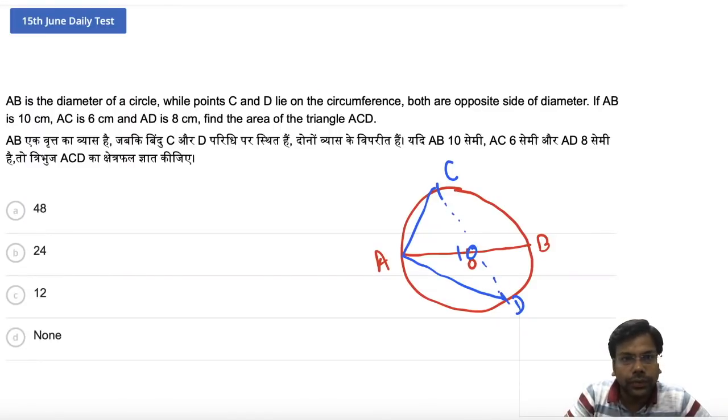This is given as 6, this is 8. And AB is 10. But you know that if you join C to B, then here will be 90 degrees. Here will be 90 degrees and here will be 90 degrees.